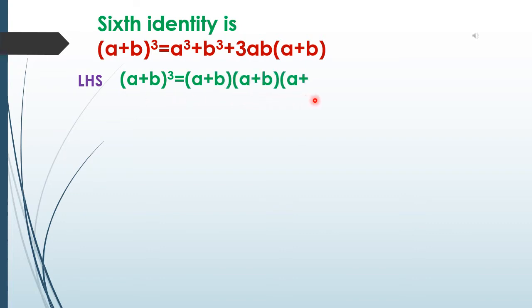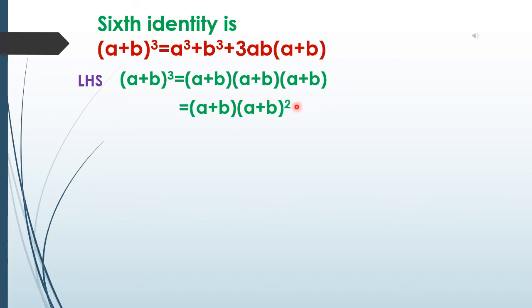We write it as (a + b) × (a + b)² . You already know this identity: (a + b)² = a² + 2ab + b².